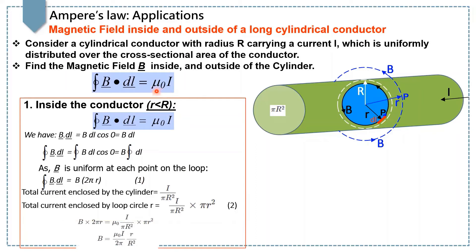Now we concentrate on the right hand side of this equation. The total current enclosed: the current density is the total current i divided by πR², which is the cross-sectional area of the conductor. Since we are interested in the total current passing through only this Amperian loop of radius r, we can write i over πR² multiplied by πr². Hence this is the total current enclosed by the loop of radius r.